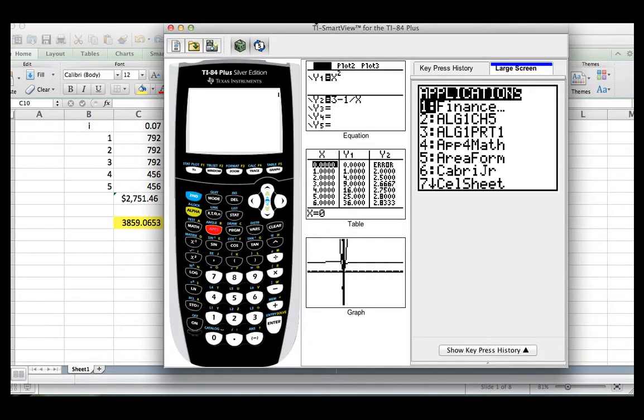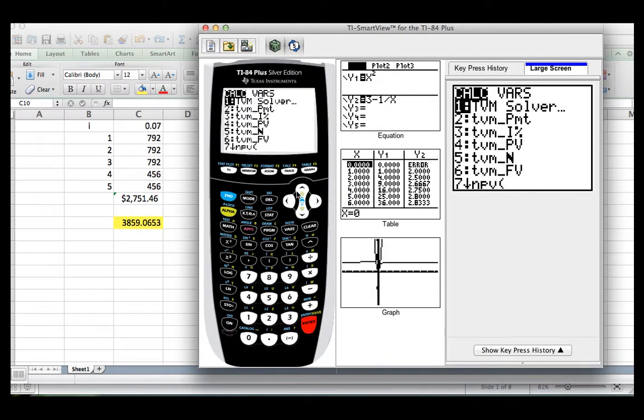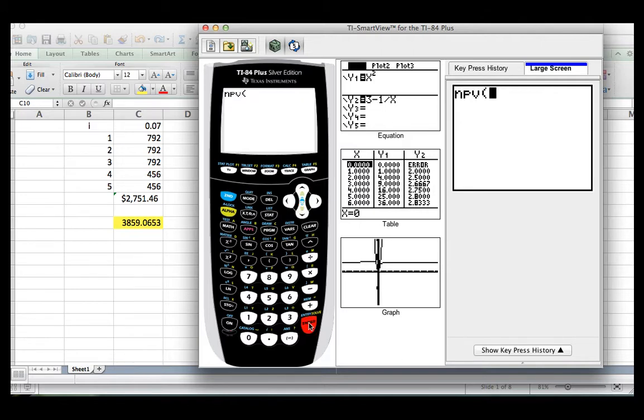You click on Apps, then you click on Finance, then remember, you go to NPV. Don't forget, I have a whole video on this. Enter.